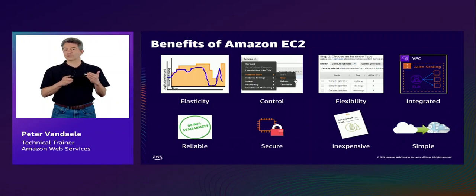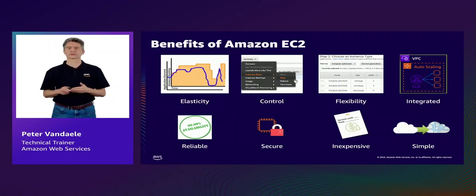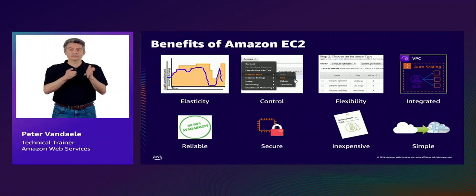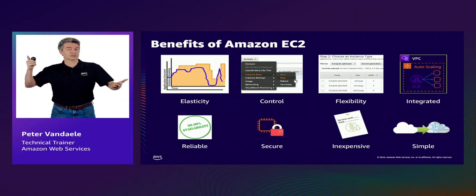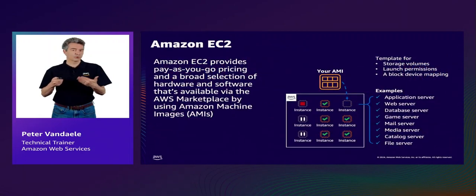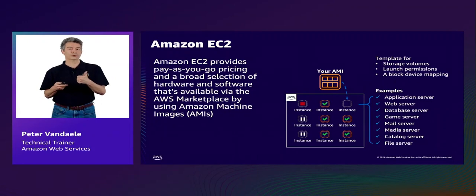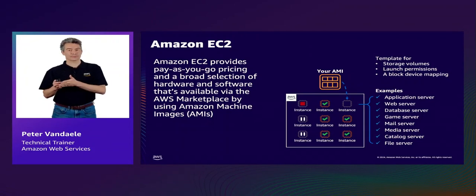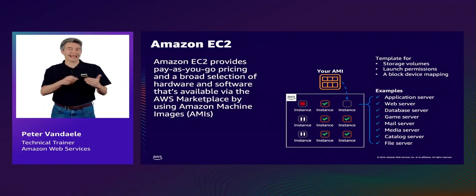There are a number of different EC2 instance types and families we'll talk about in a moment. You can pick the right type of instance for the right type of job. EC2 is also integrated with other services, like the Elastic Load Balancer, which enables you to create a secure, scalable and highly customizable architecture. There are additional benefits to EC2, such as reliability and security, which we'll touch on later. It's inexpensive as you can pick the right type of instance for the job, whether it's a small or large instance to match the appropriate workload.